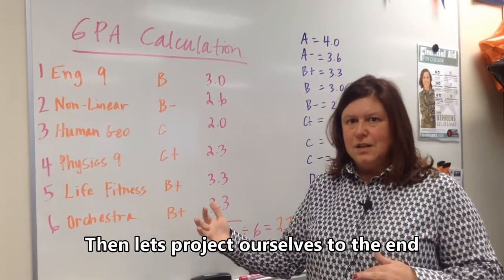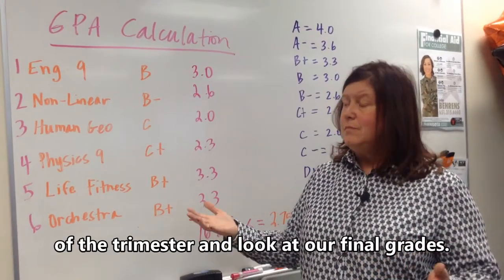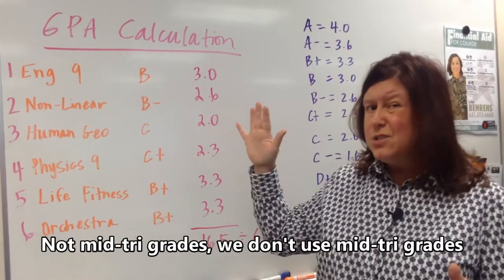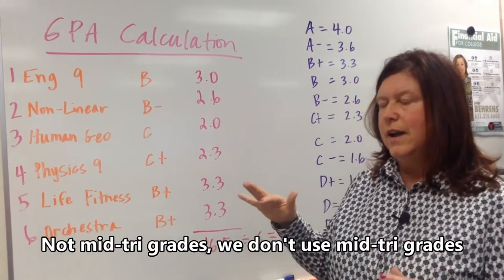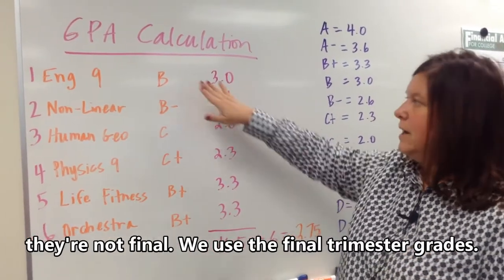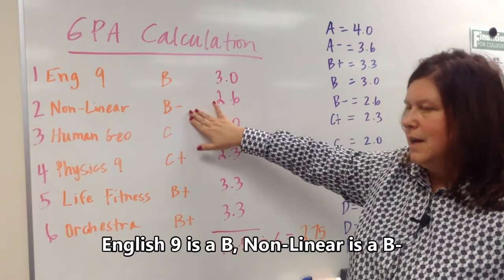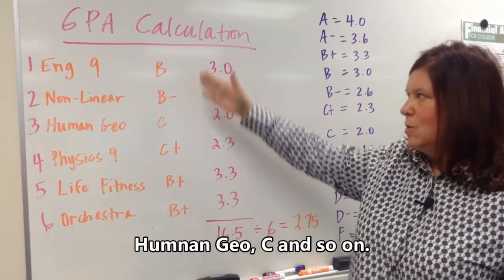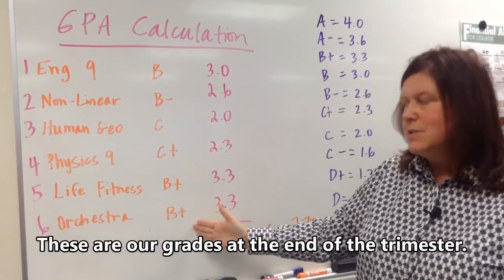Then let's project ourselves to the end of the trimester and look at our final grades. Not mid-tri grades, we don't use mid-tri grades, they're not final, so we use the final trimester grade. English 9 is a B, Non-Linear B-, Human Geography C, and so on. So these are our grades at the end of the trimester.